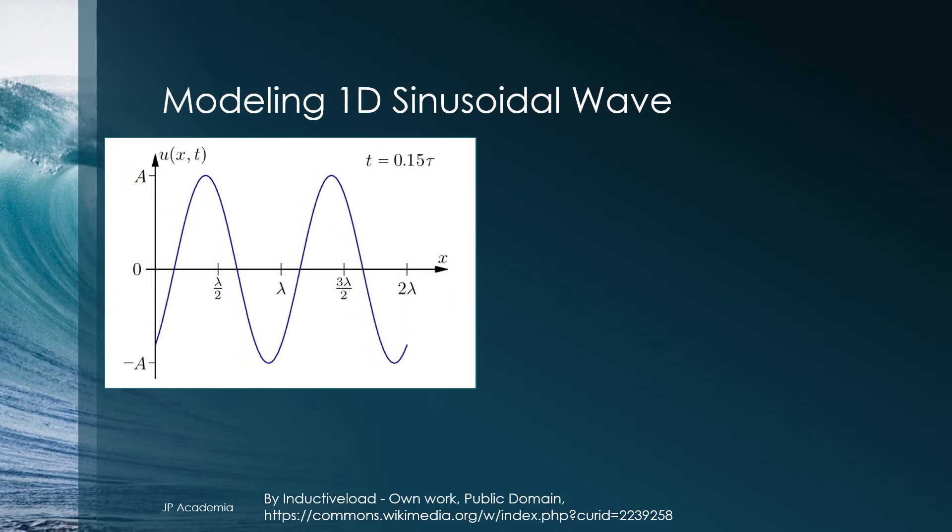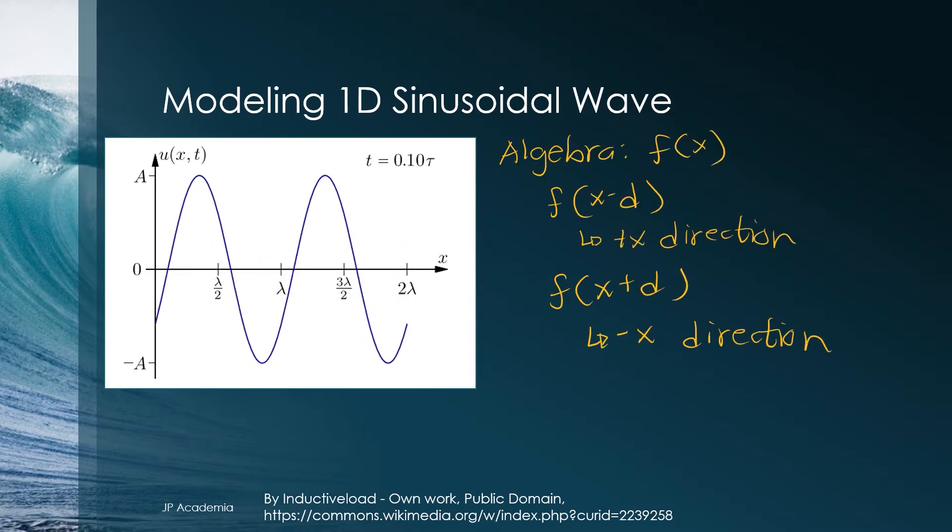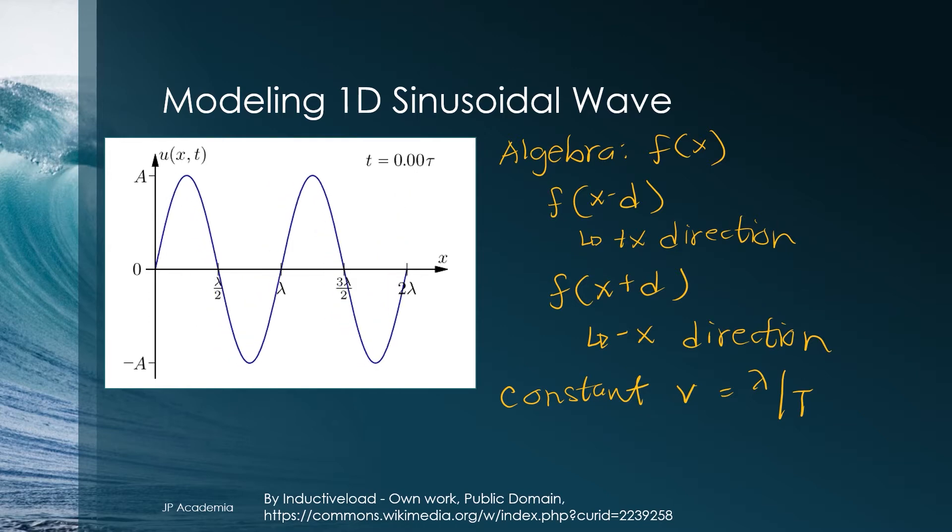For one-dimensional sinusoidal waves, we can create a mathematical model called the wave functions that is used to find the position, velocity, and acceleration of the particles of the medium of the wave as a function of time. I have this GIF file. Notice that each point in the string oscillates up and down in simple harmonic motion between positive a and negative a with the period of t. Recall from our algebra that if we have a function f of x, then f of x minus d is just that similar function translated in positive x direction by distance d. Similar with the function of f of x plus d, which is translated now in the negative x direction by the distance d.